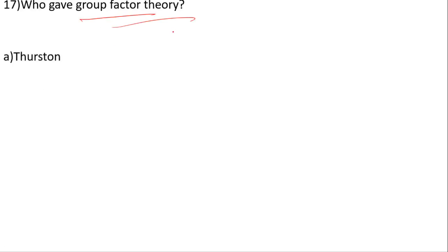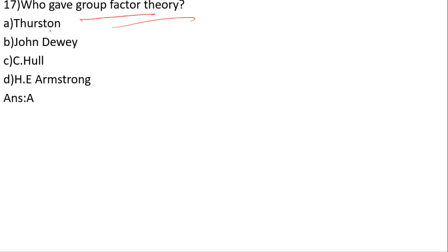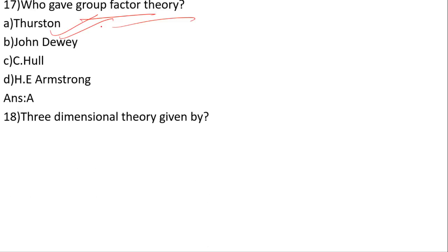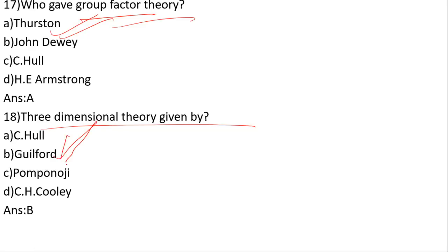Who gave the group factor theory? Options: Thurston, John Dewey, Hull, Guilford. The correct answer is option A — Thurston gave the group factor theory. The three-dimensional theory was given by Guilford — that is option C.